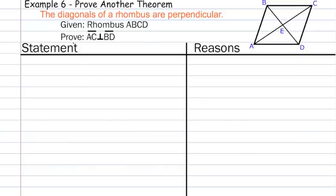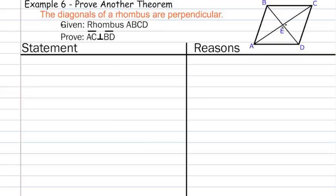In Example 6, we're going to prove another theorem. Here in orange is the theorem: the diagonals of a rhombus are perpendicular. We're given rhombus ABCD, and we need to prove that segment AC is perpendicular to segment BD. To do that, we're going to prove that the two angles at the intersection point are congruent. If we can prove they're congruent and supplementary, they have to be right angles — and that's actually a theorem. So we'll complete a triangle proof, then use corresponding parts of congruent triangles are congruent to show those two angles are congruent.